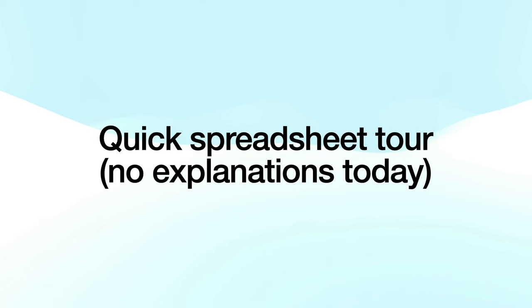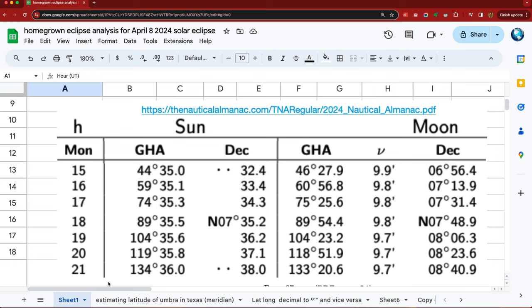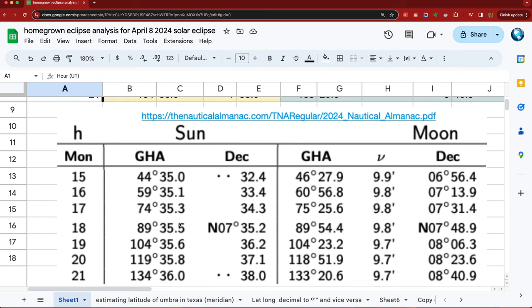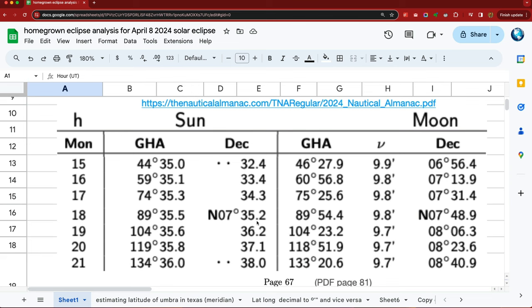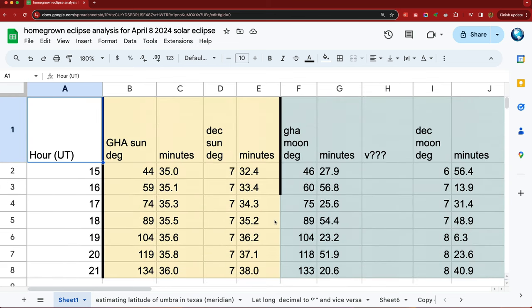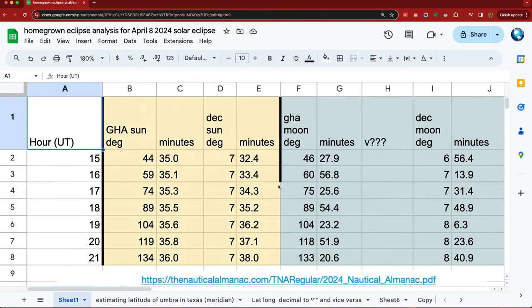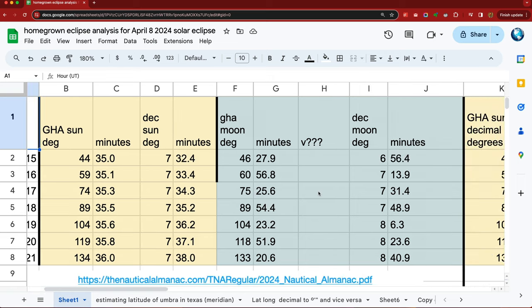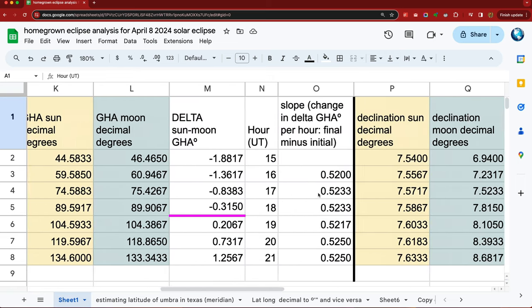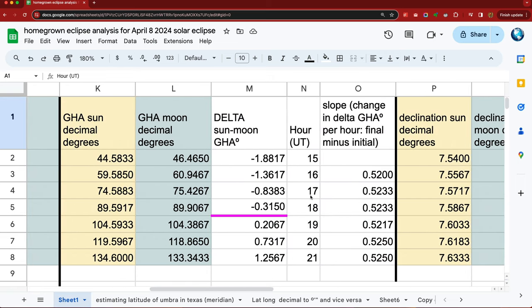So let's do a quick spreadsheet tour. I'm not going to explain it. I just want to show you my values. So I start with my spreadsheet with just a screenshot of the nautical almanac. And then what I did is I just painstakingly copied the numbers over into the spreadsheet cells so that I could start doing a mathematical analysis on those cells.